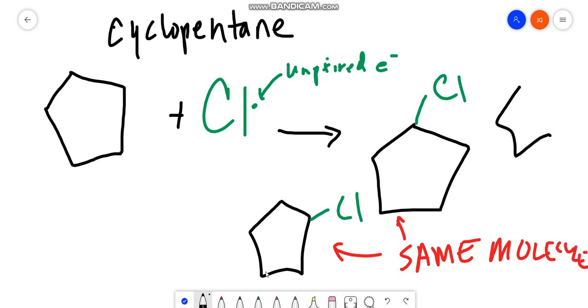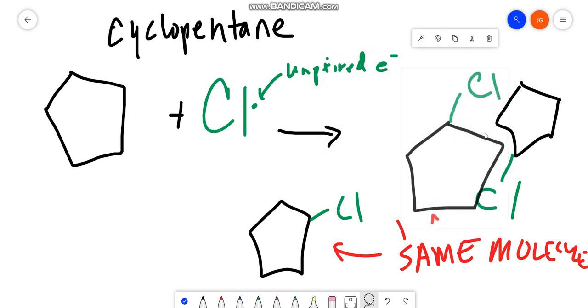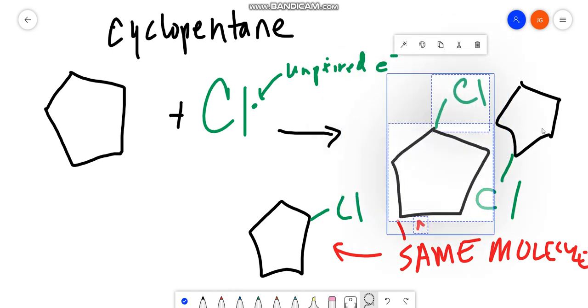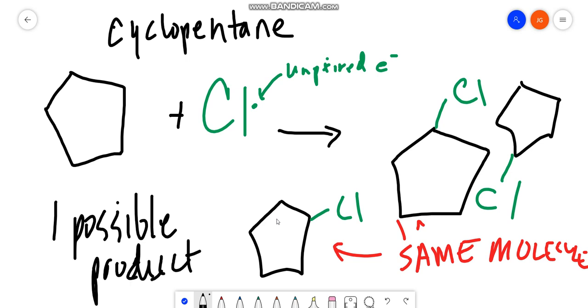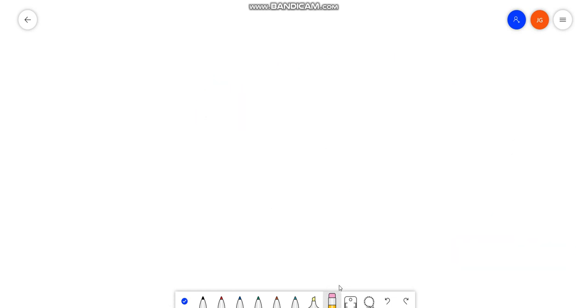And even if we draw a product at the other end, they're the same thing. They're just rotated around. You should be able to see that these are the same molecule, rotated. So how many possible products will form? There's only going to be one possible product. Because no matter where you add this chlorine, it's going to be the same molecule, just rotated. So only one constitutional isomer can form.